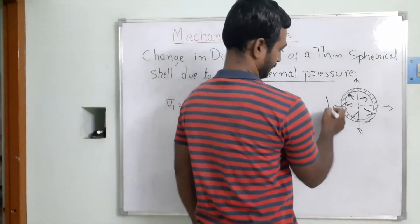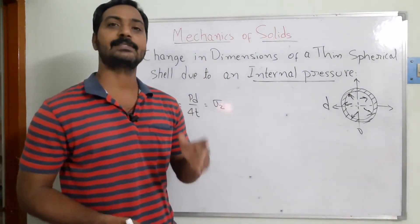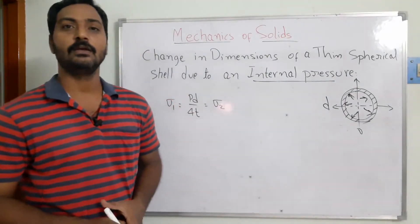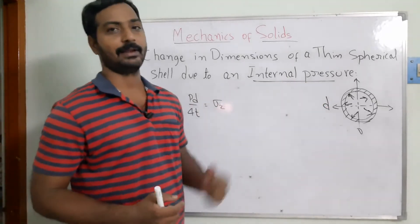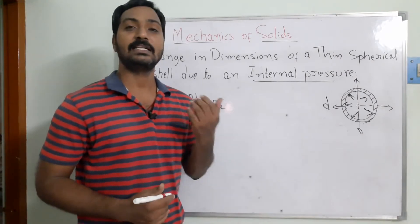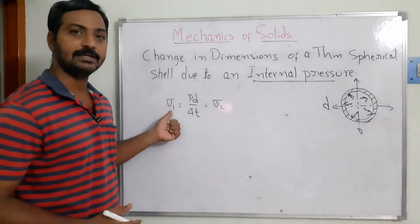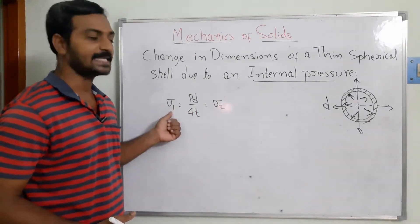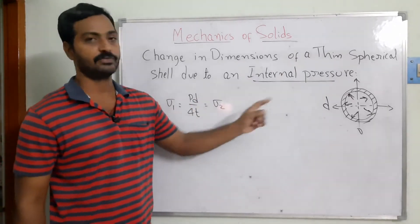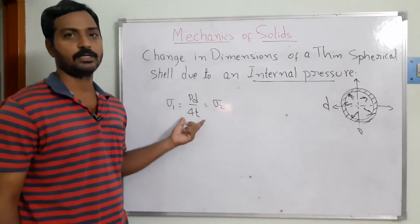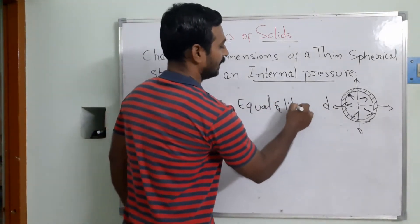Spherical shells have geometrical symmetry — in the x-axis and y-axis they are symmetric. On that basis, in the previous lecture we derived the stresses acting in the material: the circumferential stress and the longitudinal stress are equal. Sigma 1 represents the circumferential stress, equal to PD/4t, and due to symmetry the longitudinal stress is also equal to it. These are equal and like forces acting inside the thin spherical shell.